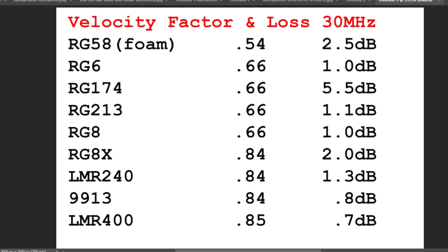Here are some velocity factors I got off the internet by searching Google for various kinds of coax. Starting with RG58 foam — the average velocity factor is about 0.54, and the loss at 30 megahertz is 2.5 dB, so nearly a 50% loss. That's pretty small cable. RG174, even smaller, has a 0.66 velocity factor and a loss of 5.5 dB at 30 megahertz. Now RG213 also has a velocity factor of 0.66, but the loss at 30 megahertz is only 1.1 dB — much less loss despite the same velocity factor as RG174.